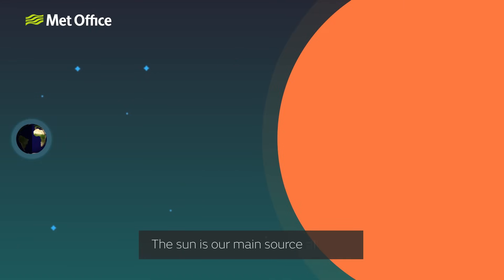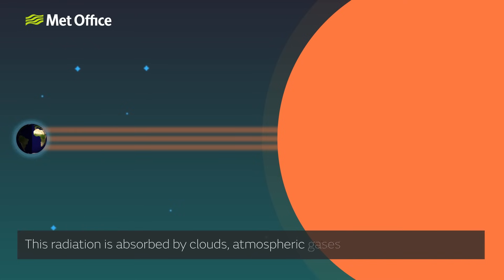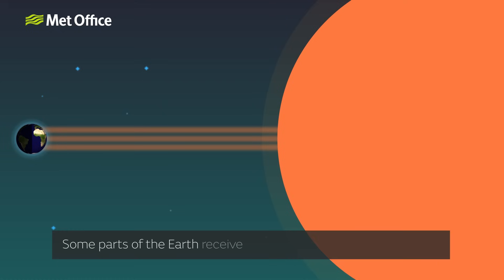The Sun is our main source of heat. This heat travels to us through space in the form of radiation. This radiation is absorbed by clouds, atmospheric gases and by the Earth's surface. Some parts of the Earth receive more of this radiation than others.